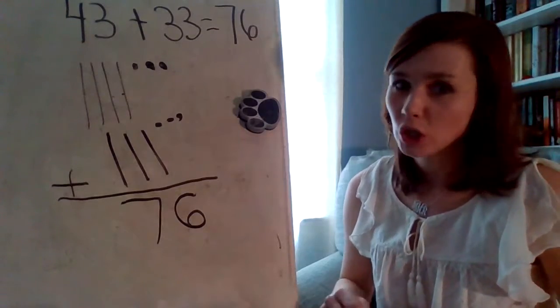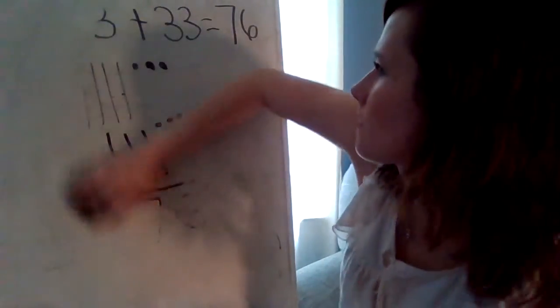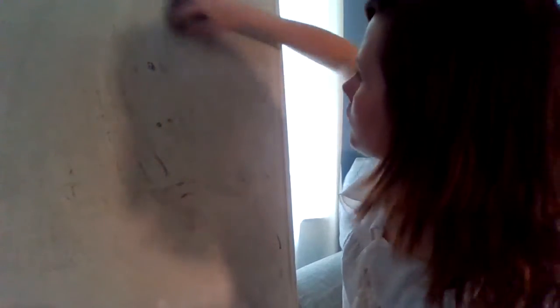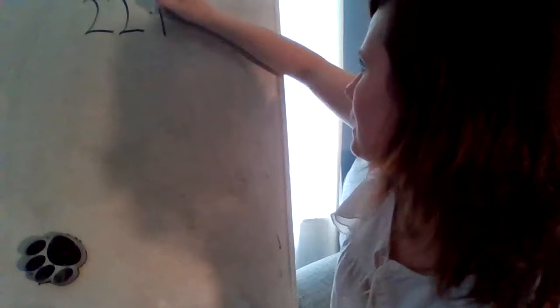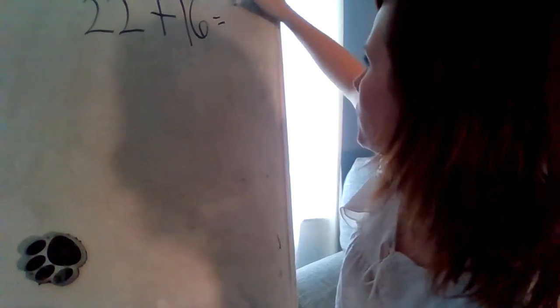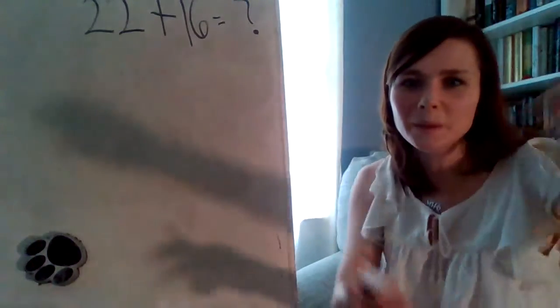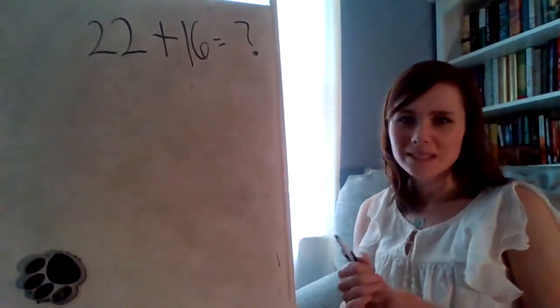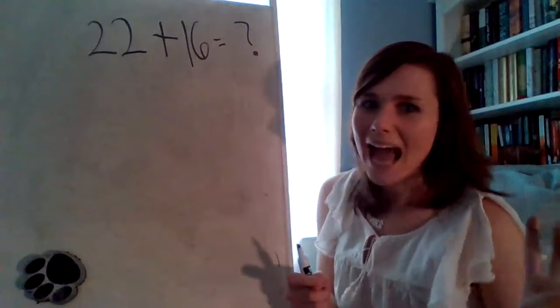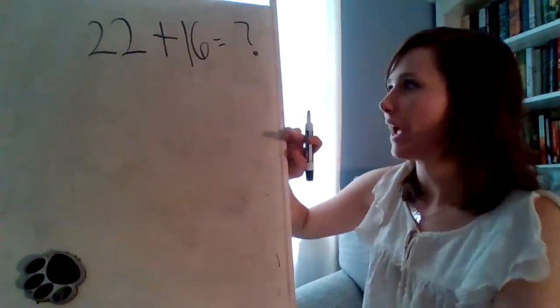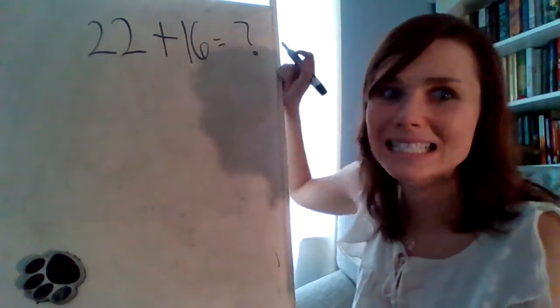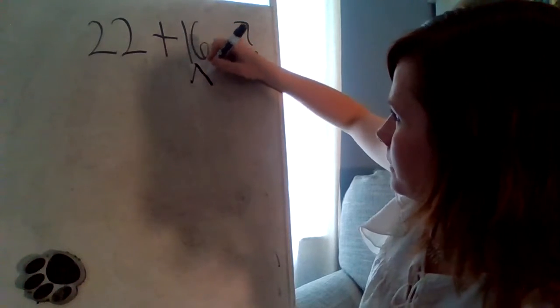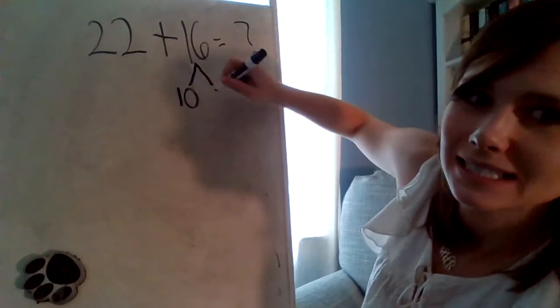All right. Let's try the next one. 22 plus 16. 22 plus 16 equals our mystery sum, our mystery number. That's a little cut off. There we go. Our mystery number. All right. Let's do it number bond style. Okay. Let's break down the smaller number. Which number is smaller? 22 or 16? 16. Right. Let's break down the 16 into a 10 and a 6. Nice job.